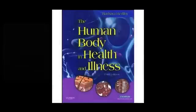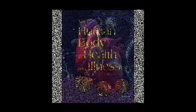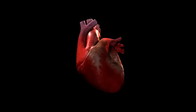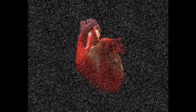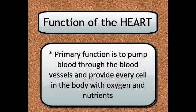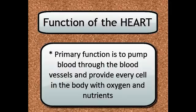Chapter 17 has to do with the physiology of the heart. Basically, the heart is a pump — it squeezes and pushes out blood. Its primary function is to pump blood through the blood vessels and provide every cell in the body with oxygen and nutrients. Every single cell in the body is affected by the heart's function.